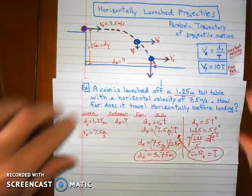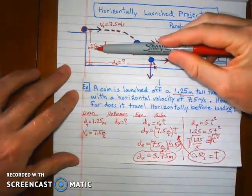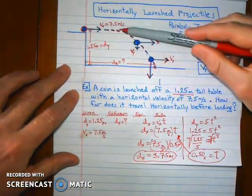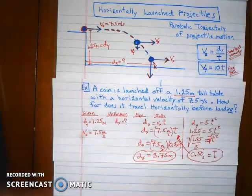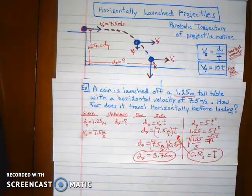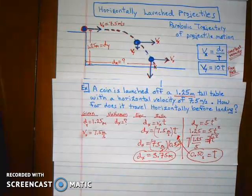So if we were doing target practice, we would know while the table is 1.25 meters tall, the coin actually shoots out a total of 3.75 meters before hitting the ground, the dx. You're going to follow this kind of logic for a few future problems. Reference this again if you get stuck.